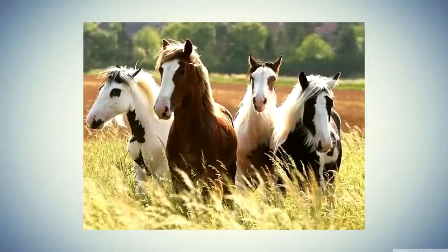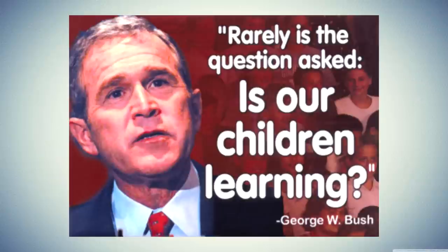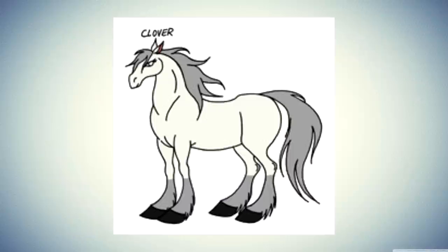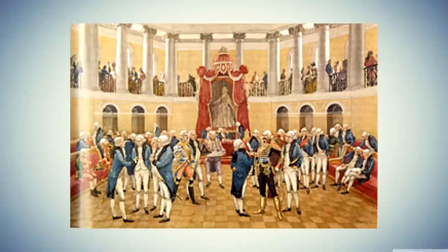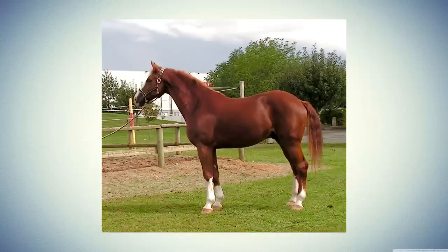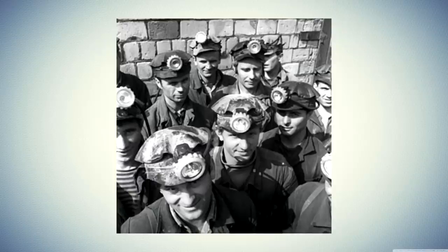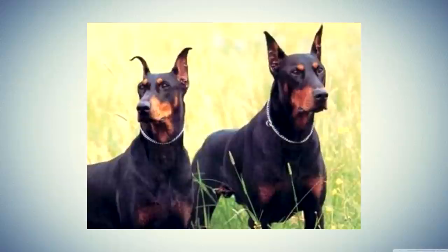Now onto the horses. Boxer represents the working class and is portrayed as a dedicated worker, but possessing a less than average intelligence. Clover is just Boxer's female counterpart. Molly seems to be some sort of representation of Russia's upper class, but since Orwell portrays her as a horse — the same animal used to represent the working class — Molly may simply represent members of the working class that remained faithful to the Tsar.